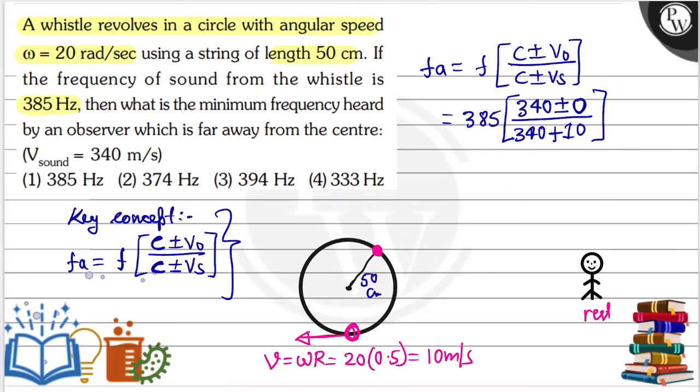So solve this and the apparent frequency will be found. This is 385 times 340 divided by 350. The zeros cancel out, giving 385 times 34 divided by 35.